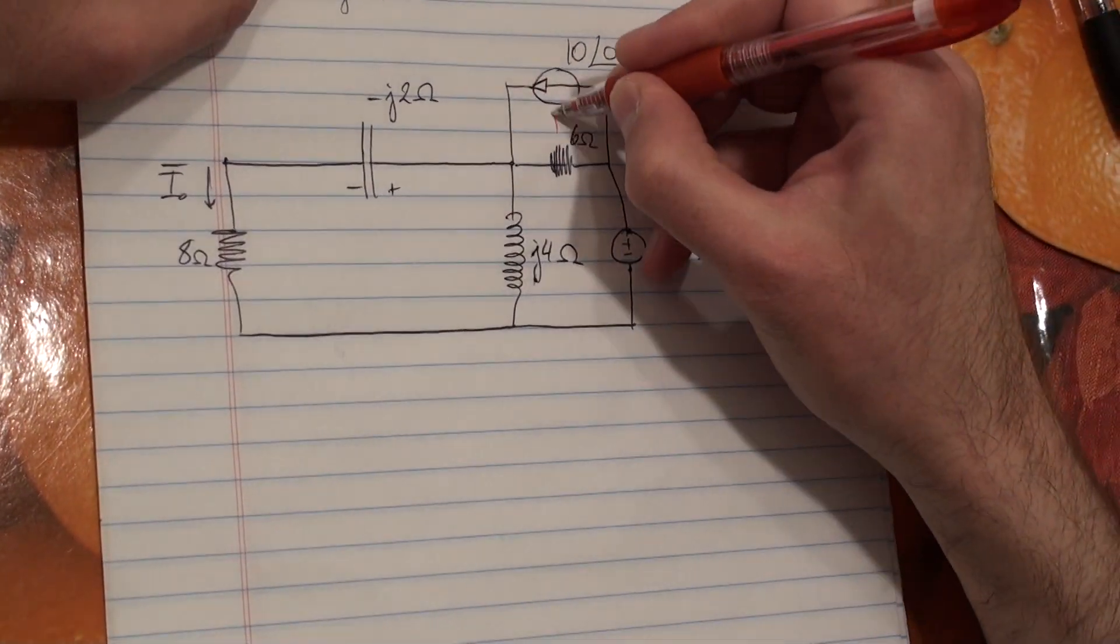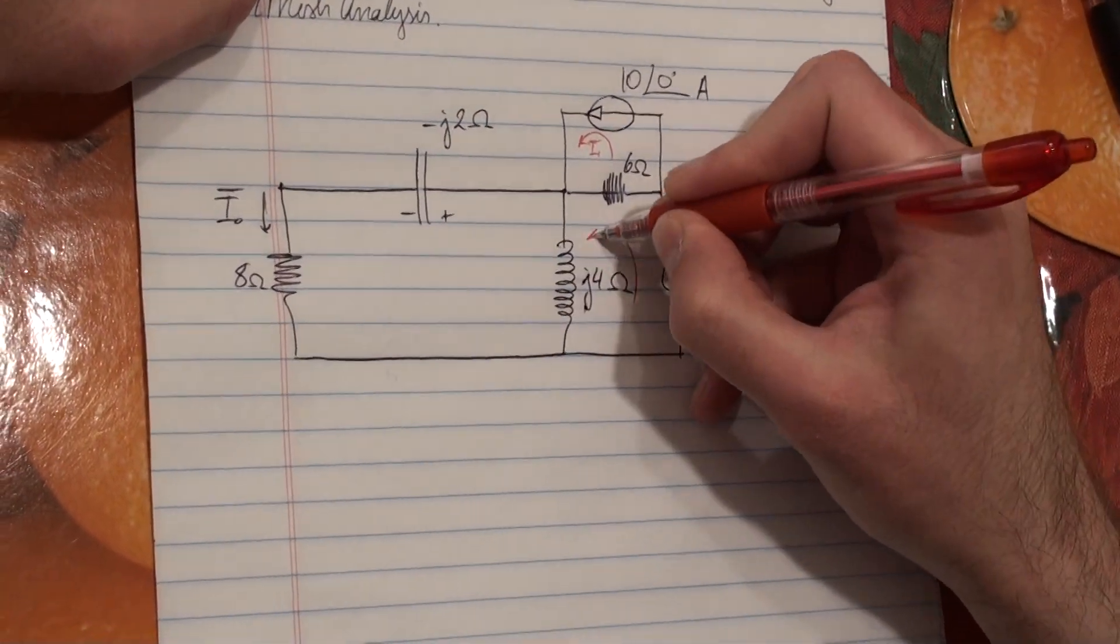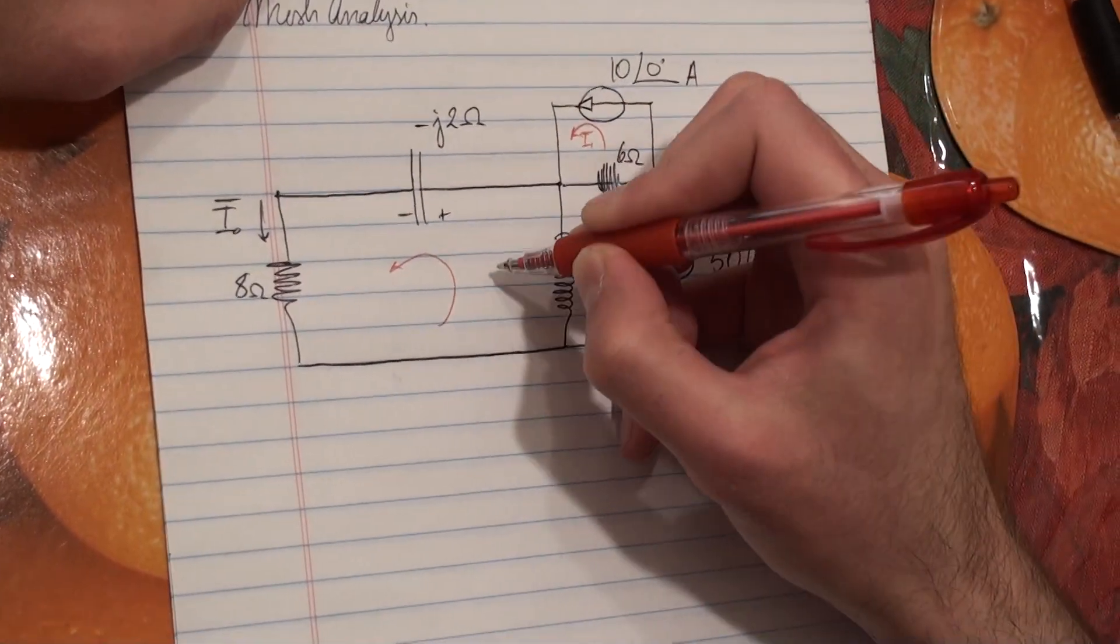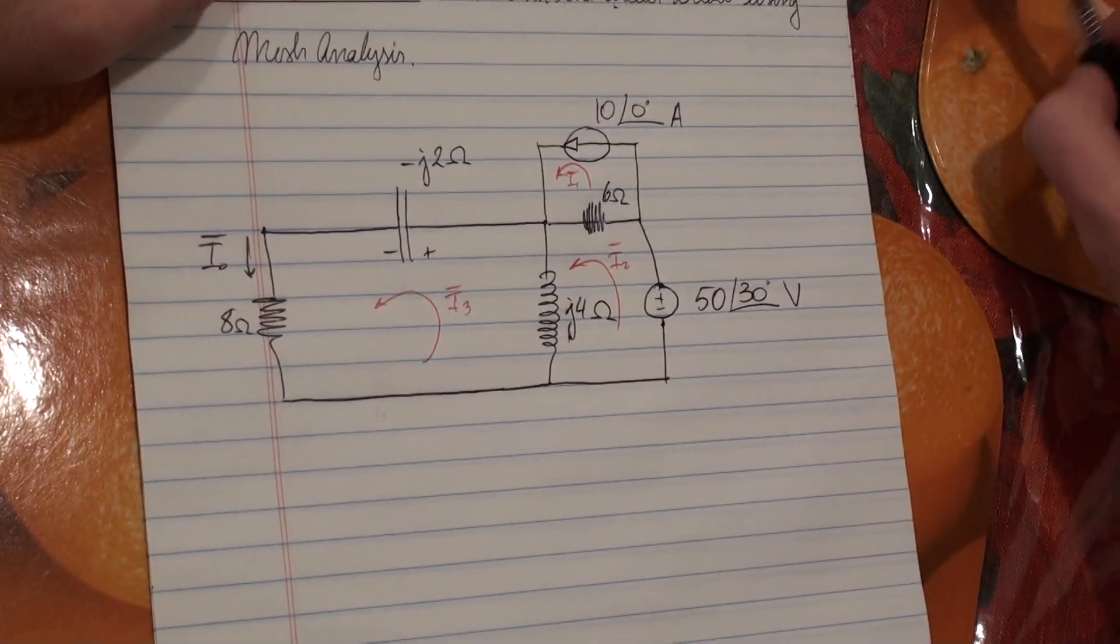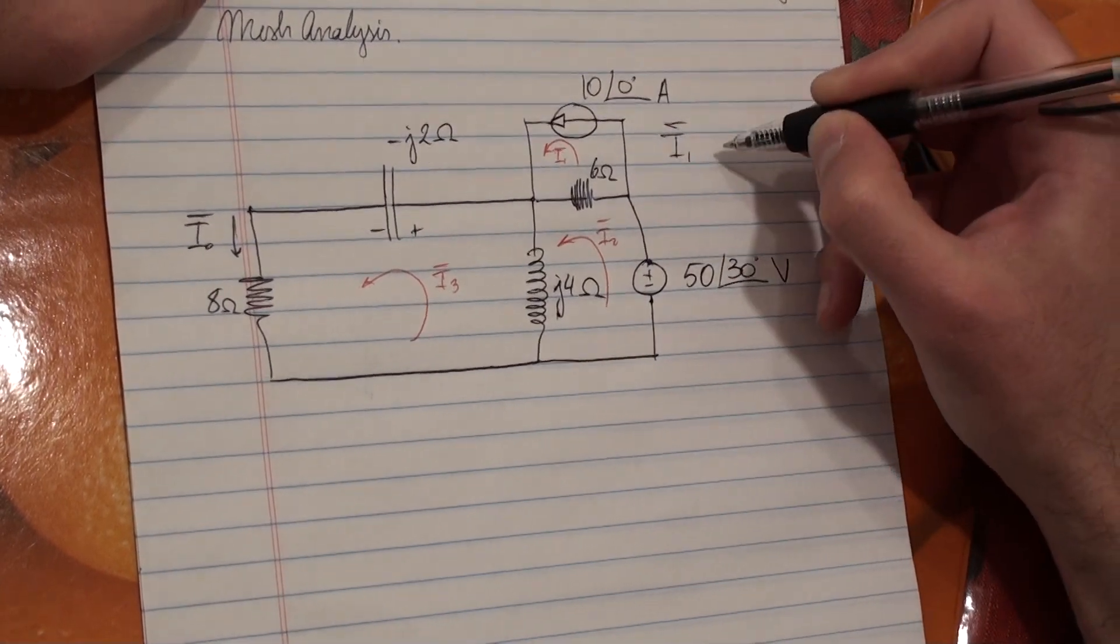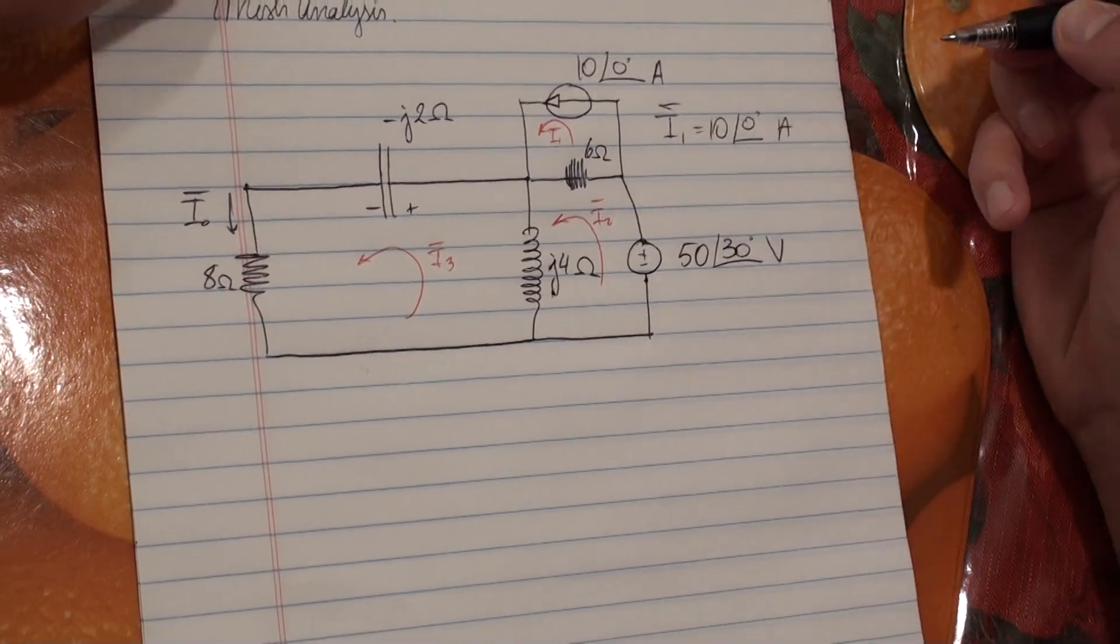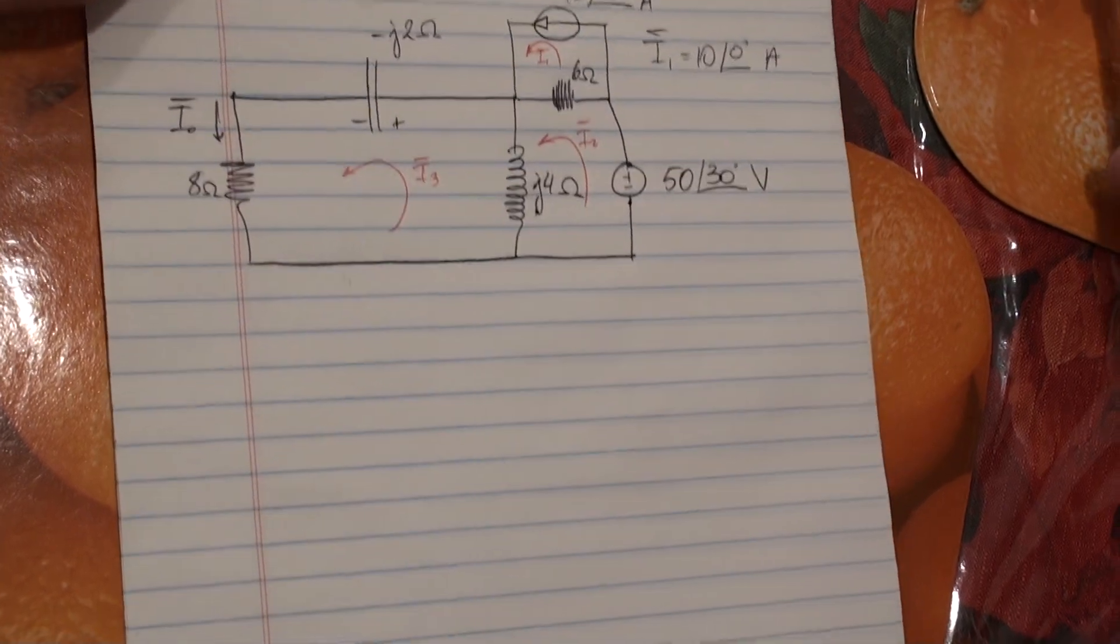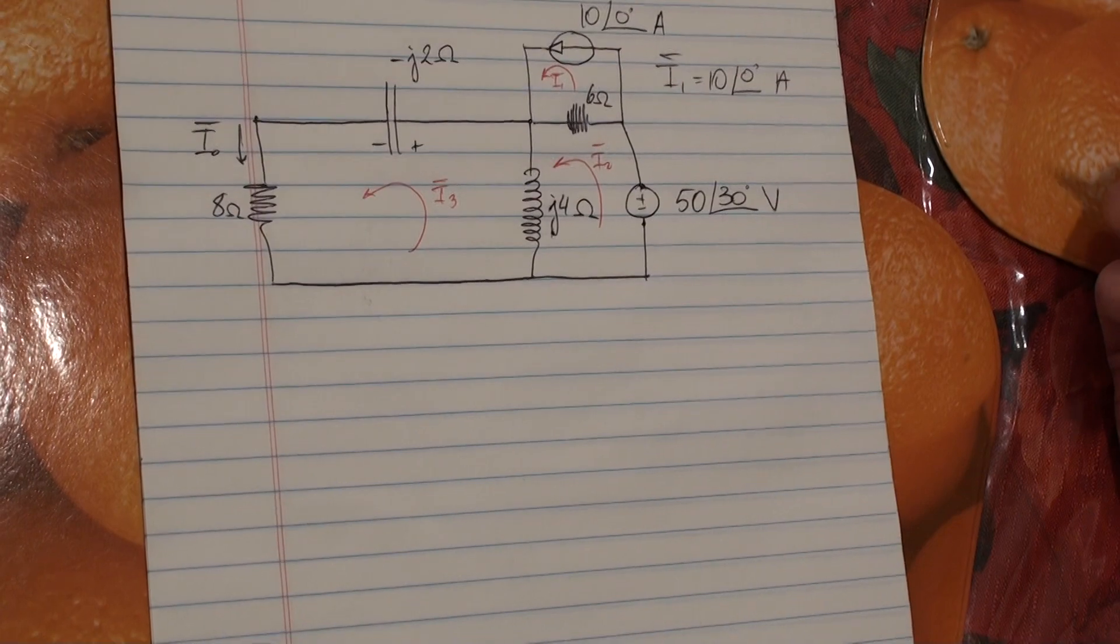So let's first pick our mesh currents. So this would be mesh current 1, this would be mesh current 2. And notice I'm writing them all as phasors because we're in the frequency domain. So here we have our mesh currents. And because here we have the current source, we have to write our constraint equation. So our constraint equation is that I1 is equal to 10 at an angle of 0 degrees. This current source forces I1 to be this.